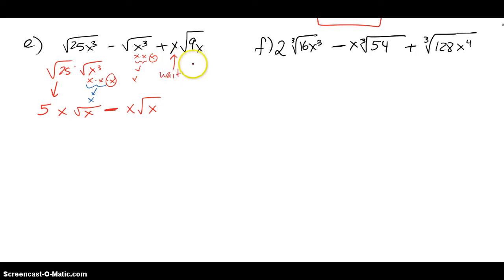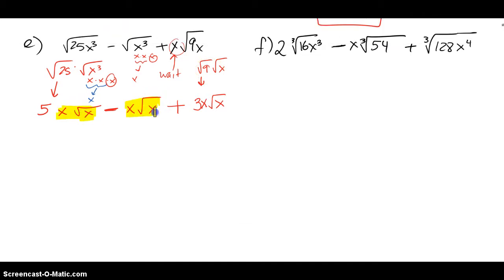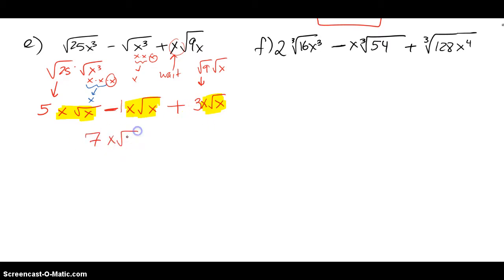For the third term, I take √9 separately and √x separately — √9 pops out a 3, and √x stays. Since there was an x waiting outside, it multiplies on the outside with the 3. Now these are like terms — all are x√x. Looking at coefficients, I have 5 minus 1 (there's an implied 1) plus 3, so 4 plus 3 is 7, giving a final answer of 7x√x.